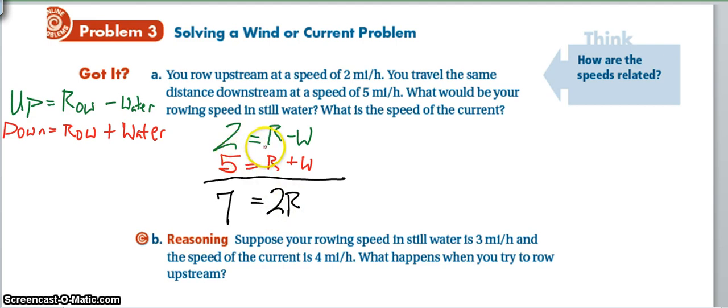And if I add the two equations together, the W's cancel out, the R's combine for 2R, and the 2 and the 5 give me 7. So if I divide by 2 on both sides to get the R by itself, we find out that R, or my rowing speed that it would be in still water, is 3.5 miles per hour. Go ahead and try B on your own. Pause the video and give it a shot.